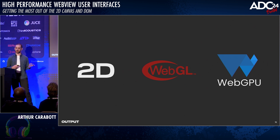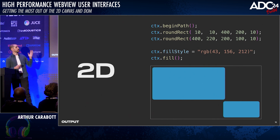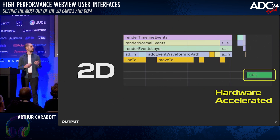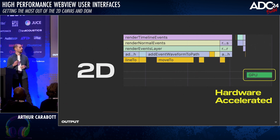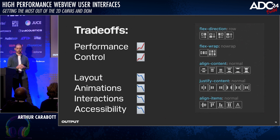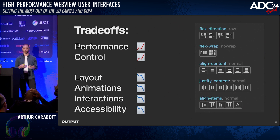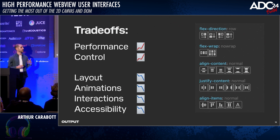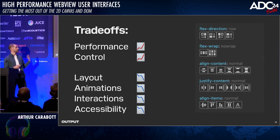Those contexts come in a few different flavors: a 2D context, WebGL 1 and 2, and the newer WebGPU. I'm focusing on the 2D context today because it has a pretty friendly API, which should look familiar to anyone who's used something like the JUCE graphics rendering context. It's also hardware accelerated — all modern browsers will use your GPU when available. Like any engineering decision, we're making a tradeoff when we use the canvas. We gain performance and control over how and when we render things. We lose immediate access to CSS layout engines, animation engines, off-the-shelf interactive elements like buttons, and off-the-shelf accessibility — but all of these can be addressed.